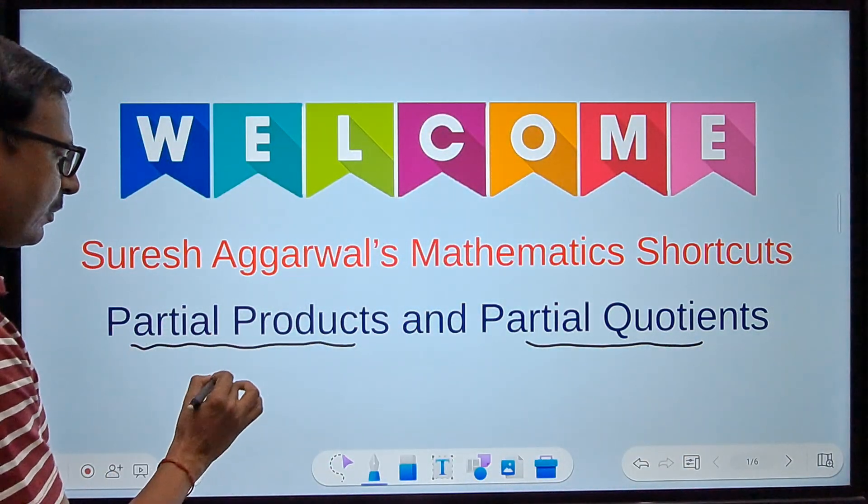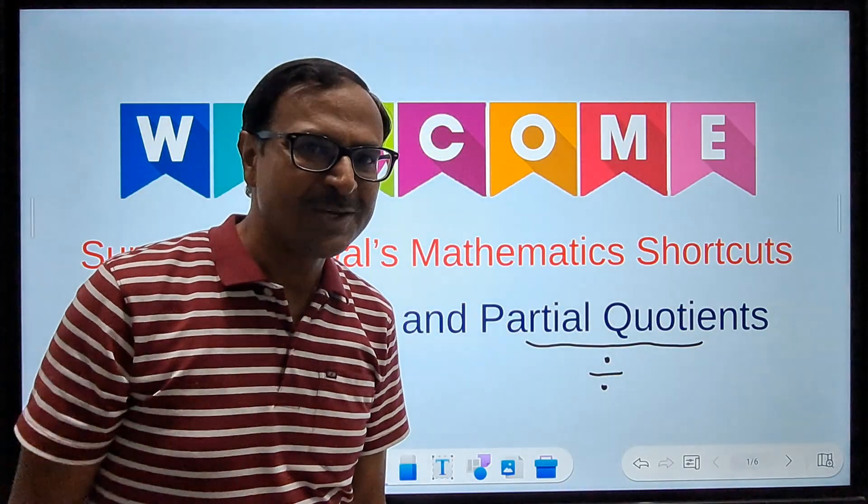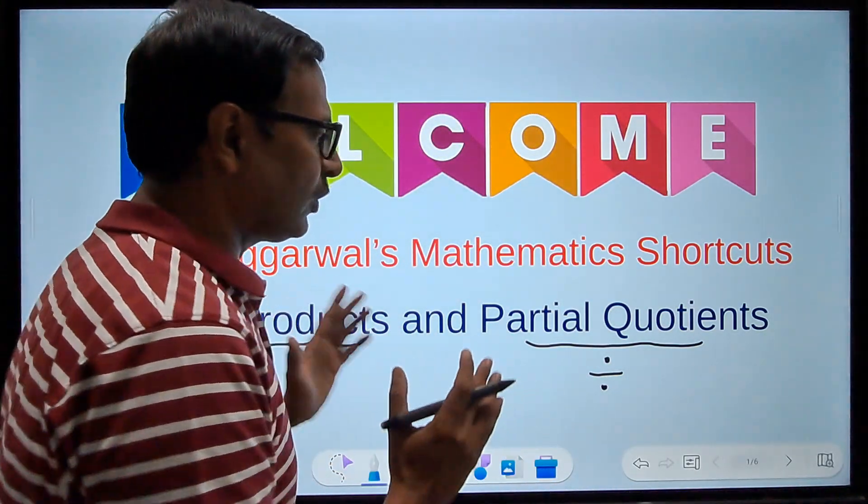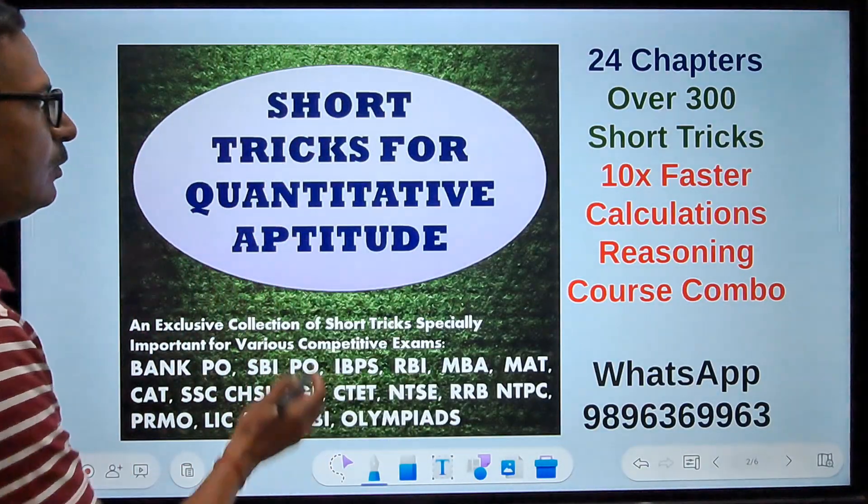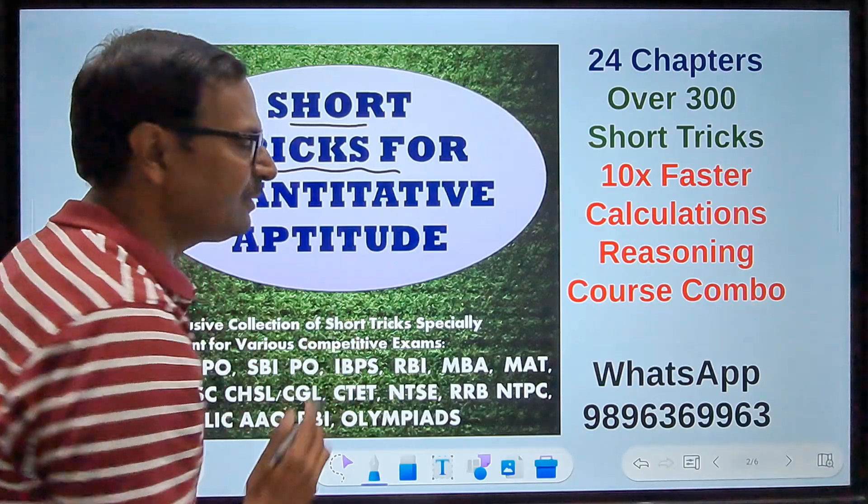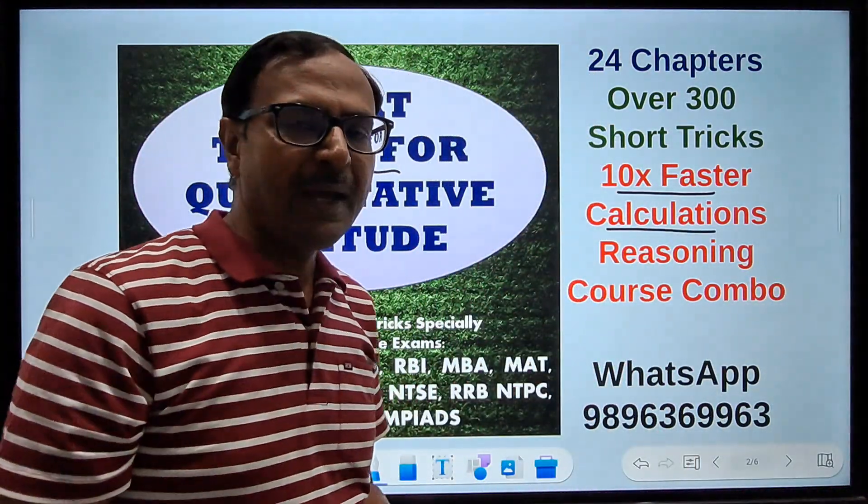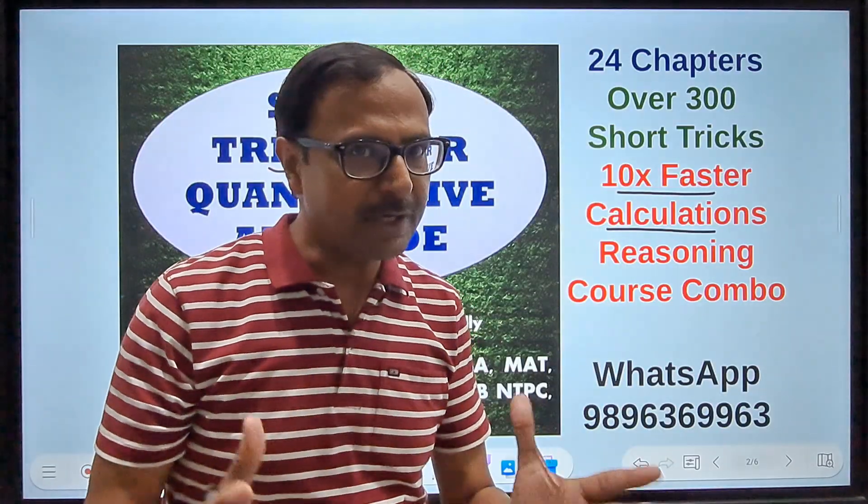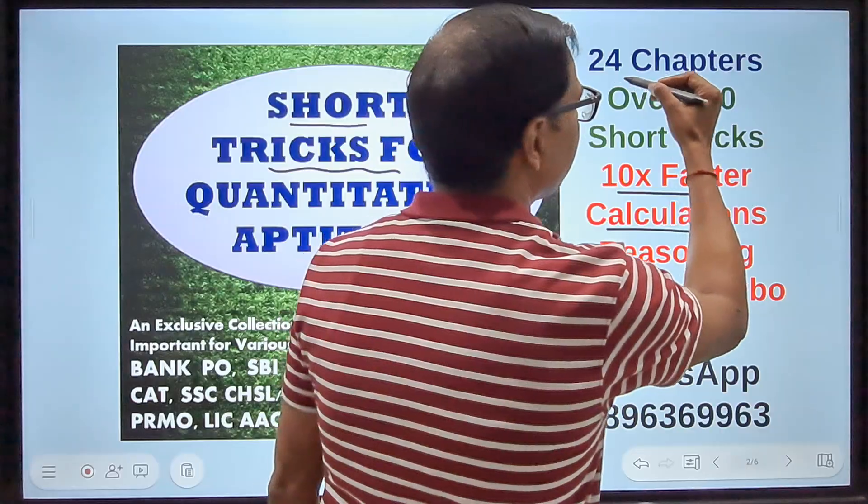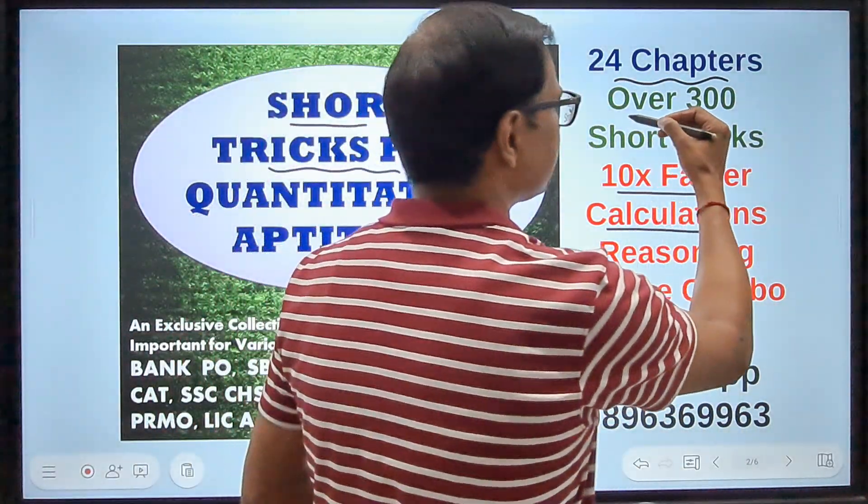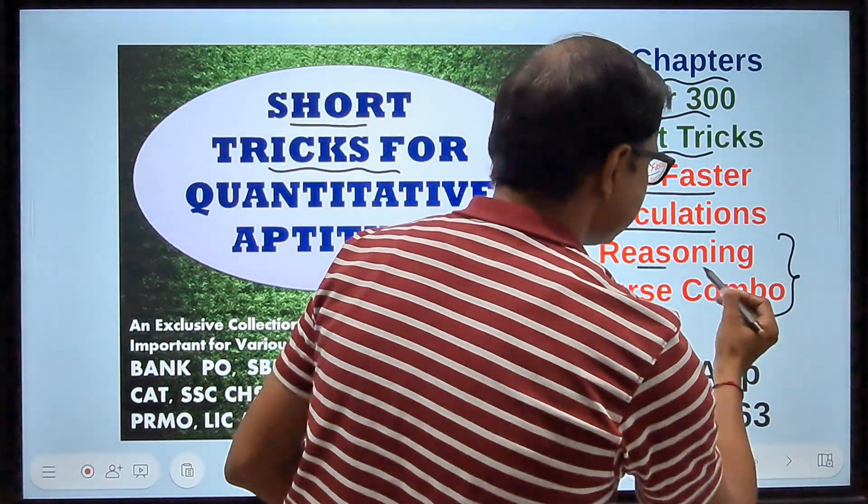So what is the method? The method of partial products and partial quotients—partial products for multiplication and partial quotients for division. Before understanding the concept behind the trick, let me tell you about the eBook of short tricks which we have brought out specially for all those looking to calculate 10 times faster and clear those quantitative aptitude exams. The eBook contains 24 different chapters covering over 300 short tricks, and it comes with a combo of reasoning in which we have given videos also.